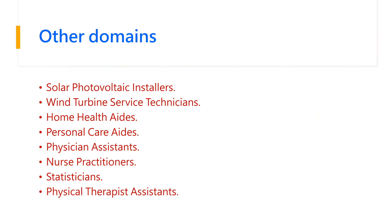Other domains in the future will be solar photovoltaic installers, wind turbines, and home health aides. Everyone is getting COVID testing kits — you can test yourself at home without going to a lab — those kinds of things will become common. Statisticians are a big area we recently realized the importance of after COVID: understanding how many cases there are, in which age group, area, city, region, and state, all that information being used to predict the future. Statisticians are going to play a big role going forward.